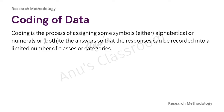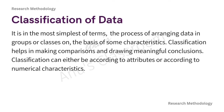Next, how can we classify data? The process of arranging data in groups or classes on the basis of some characteristics is called classification of data. Classification helps in making comparisons and drawing meaningful conclusions. It can be done according to attributes — like sex, caste, education, or land holdings — or according to numerical characteristics such as height, weight, or marks.